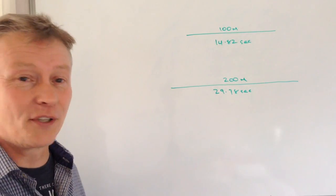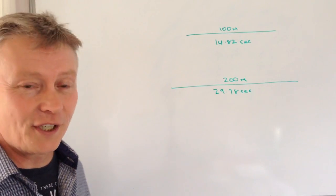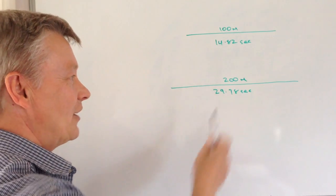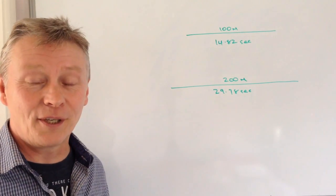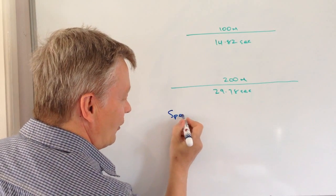However, essentially it's a school sports day. A 100m race is run in 14.82 seconds and a 200m race is run in 29.78 seconds. And what they're asking us to do is to work out the fastest.